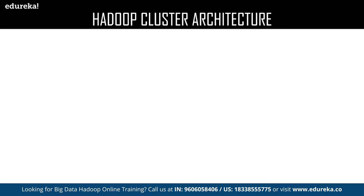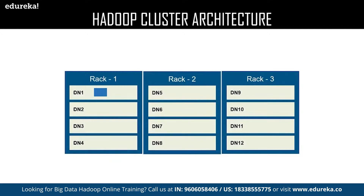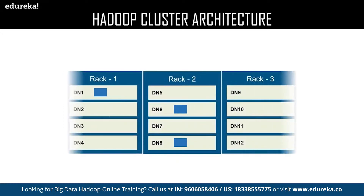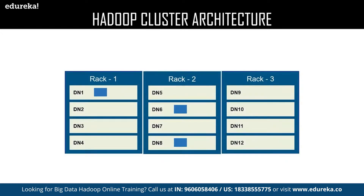Let us look at an example to understand this better. I have a data block on DataNode 1, and DataNode 1 is available on Rack 1, which is the local rack. According to the rack awareness algorithm, the replica of the data block in DataNode 1 can be stored in remote racks — either Rack 2 or Rack 3. As you can see, the replicas have been stored in the remote rack, which is Rack 2.